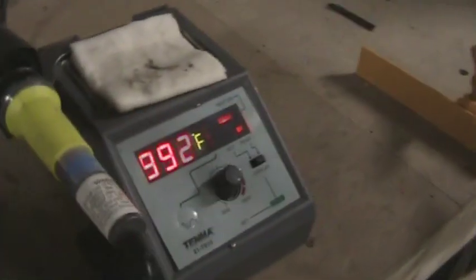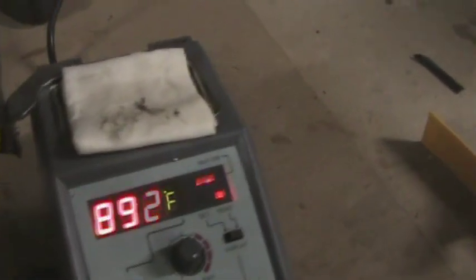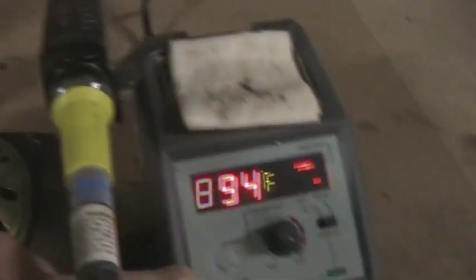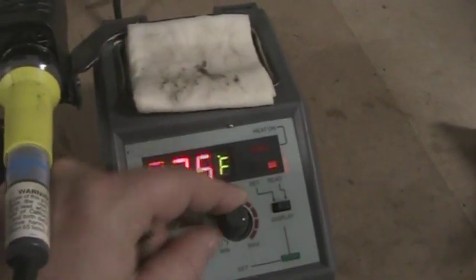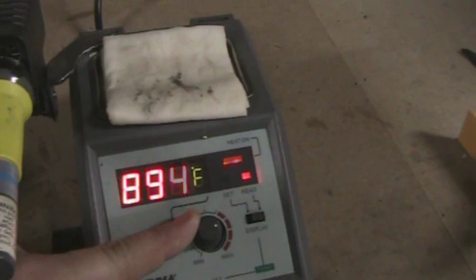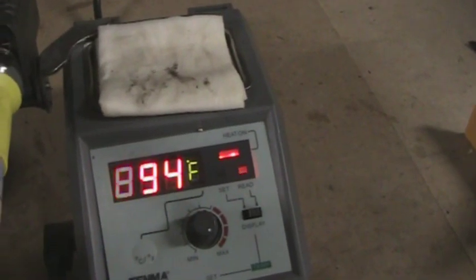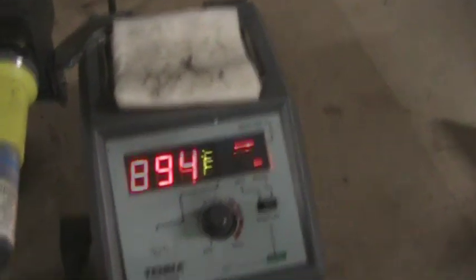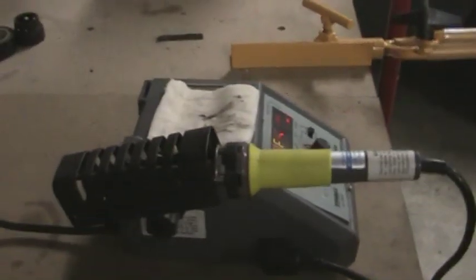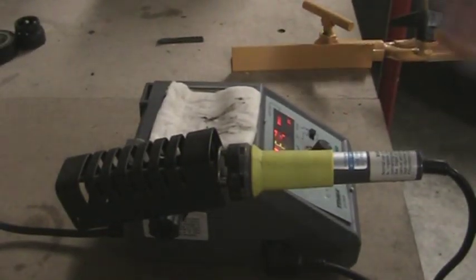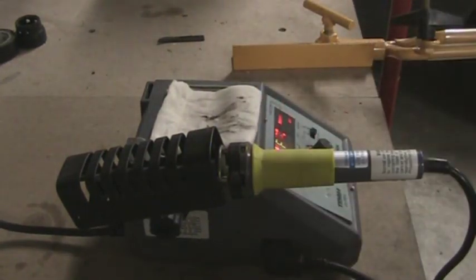I'm using a Tenma digital soldering gun or iron, whatever you want to call it. It's got a digital readout, you can adjust your temperature via the knob there. It's got Celsius and Fahrenheit. Just a basic unit - I think those sell for about a hundred bucks, maybe a little more or less. But this procedure is the same for any gun.